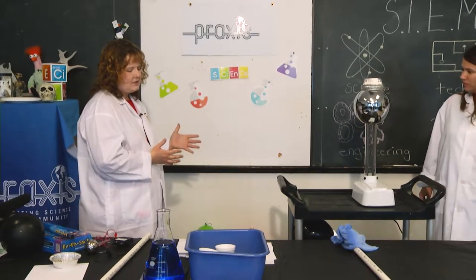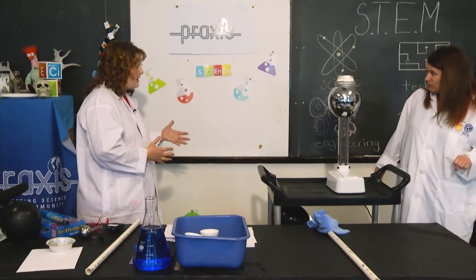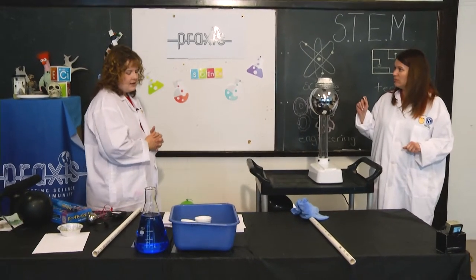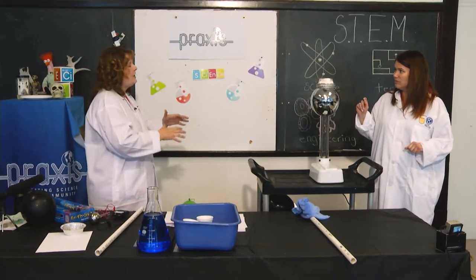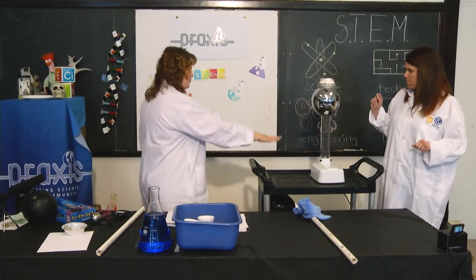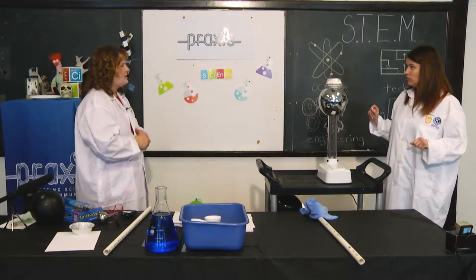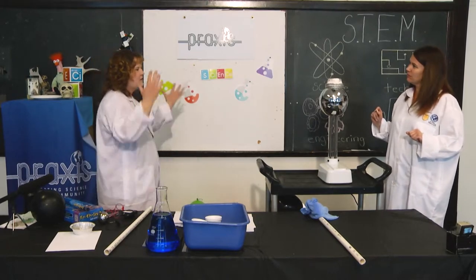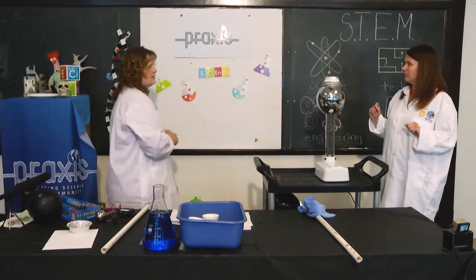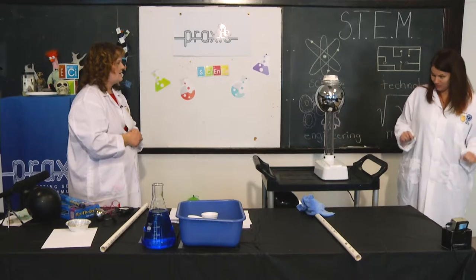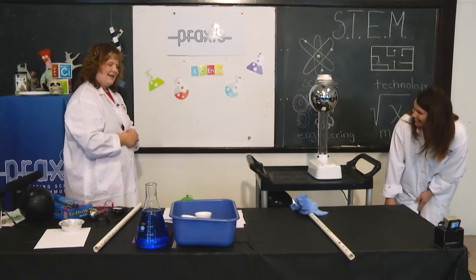Okay. So we have Van de Graaff generator here, which is basically, it's just a machine, an electrostatic machine that generates, it accumulates the electrostatic electricity based with that belt there. It's going to just keep going around and around and around. So once you turn this on, we're going to see those, the movement of the electrons, the positives and negatives cause these little pie tins to do something. So let's see what happens. Ready? Ready. Ready.